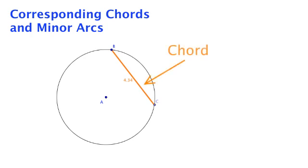A chord is a segment connecting two points on a circle. The shorter arc formed by the endpoints of the chord is called its corresponding minor arc.